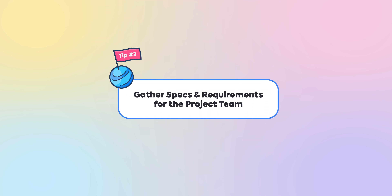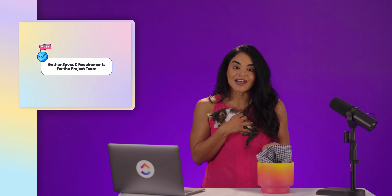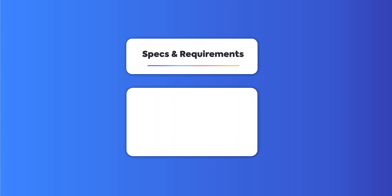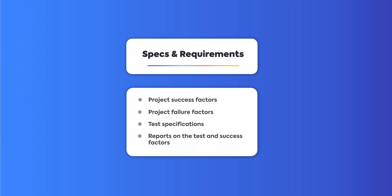Number three: gather specs and requirements for the project team. The next step in your project management checklist is to gather the specifications and requirements for your project. This will depend on the type of project you're working on. In general, your specs and requirements should include result-oriented criteria like project success factors, project failure factors, test specifications, and reports on the test and success factors.